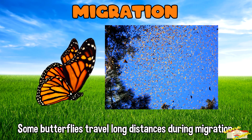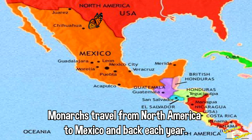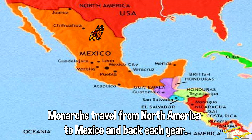Some butterflies, like the monarch butterfly, travel long distances during migration. Monarchs travel from North America to Mexico and back each year.